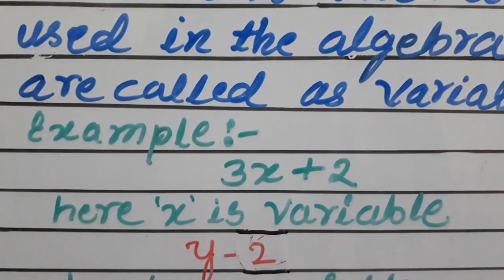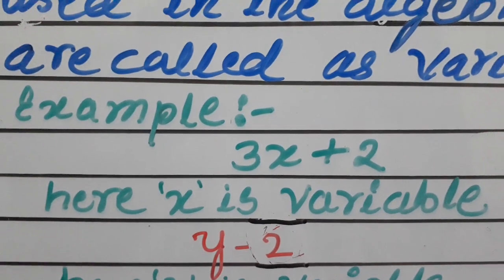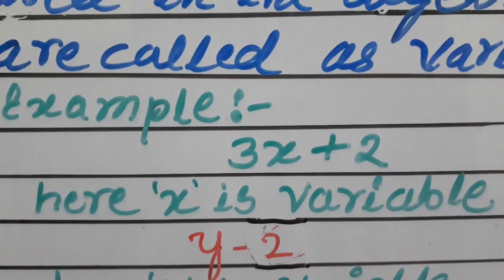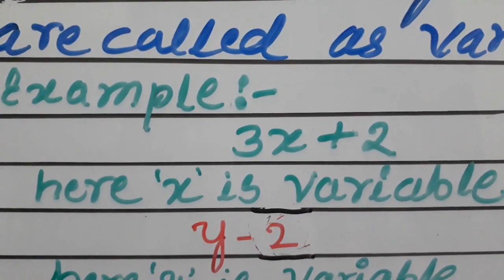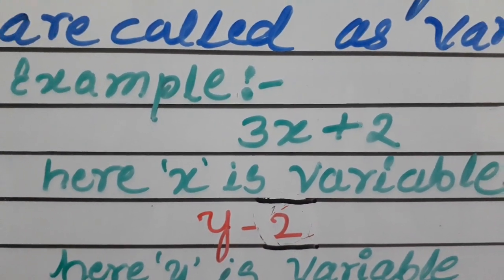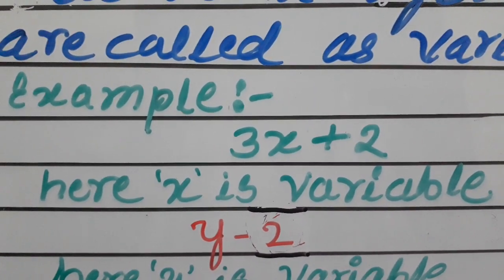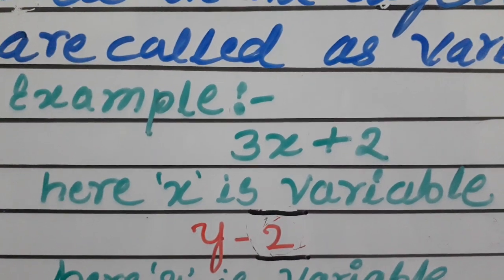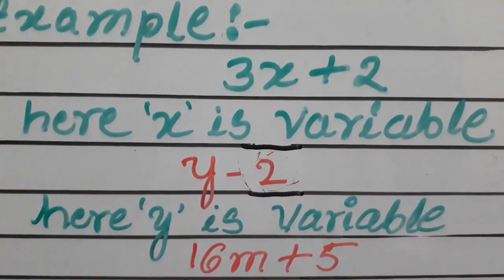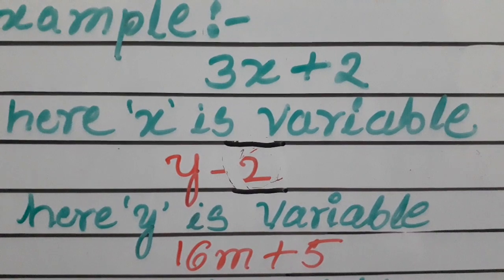Now consider the example Y minus 2. Can you tell which variable is used in this expression? Yes — in Y minus 2, Y is the variable. Y is a variable because the value of Y is not fixed; it depends upon the value in our expression.